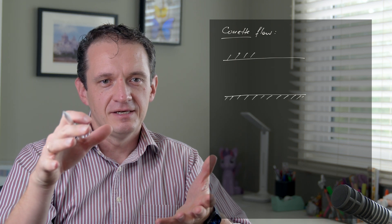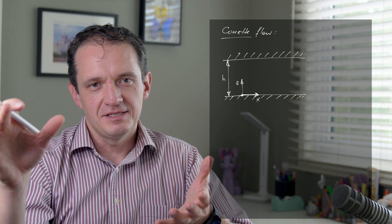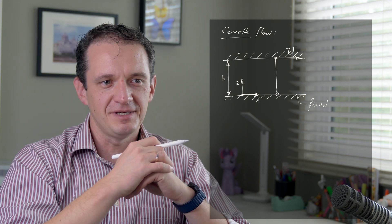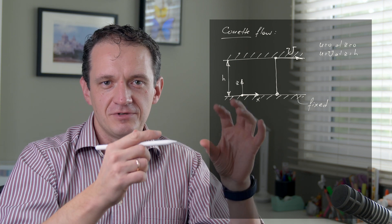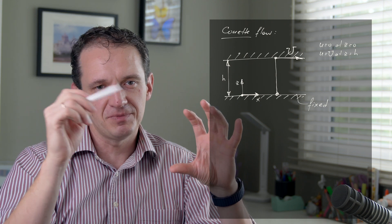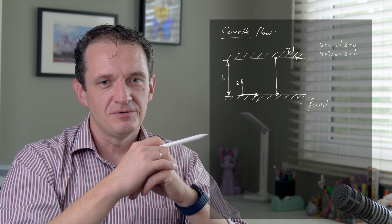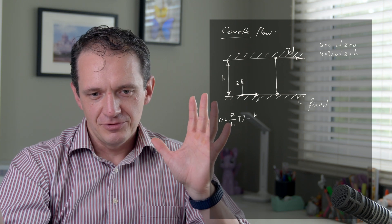One example we are considering is Couette flow, which is the flow between two parallel plates. There is a fluid between them; one plate is fixed and the other is moving parallel to the bottom plate. The boundary conditions are simply no-slip: the velocity u at both plates matches the plate velocity. At the bottom plate it is zero; at the top plate it is U, the speed at which the top plate is moving. The viscosity drags the fluid along.